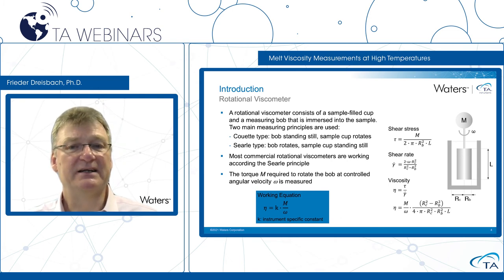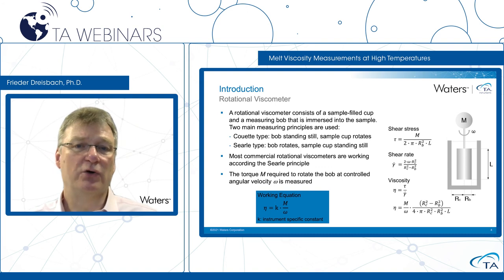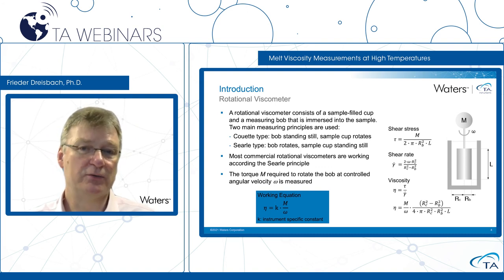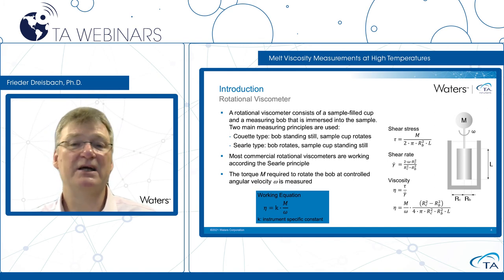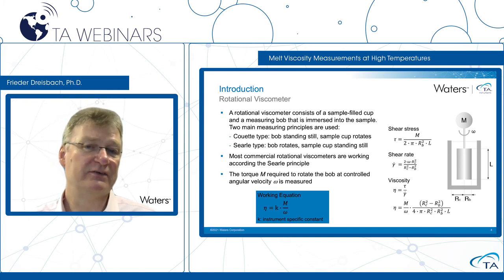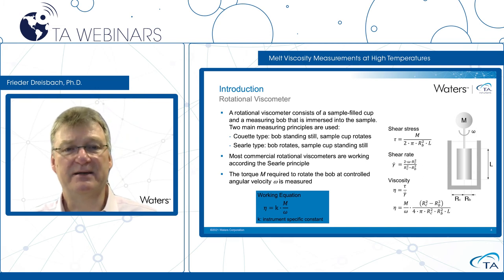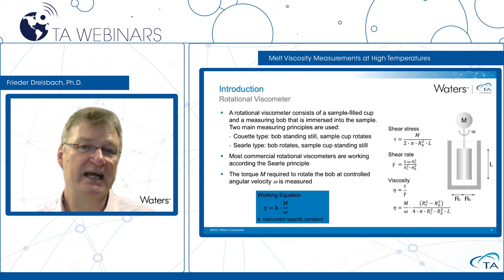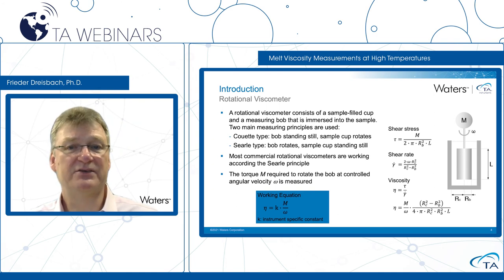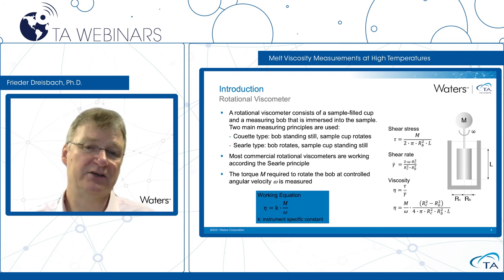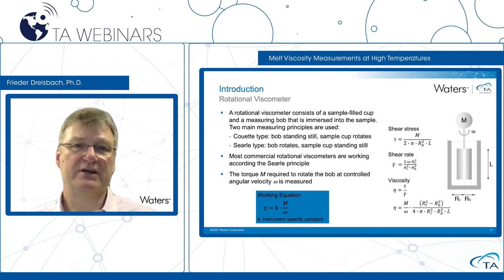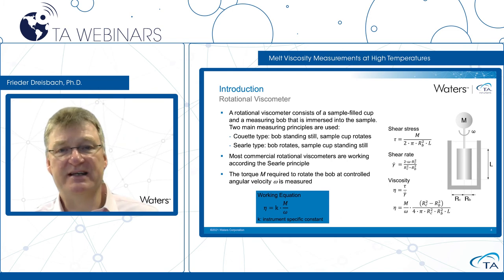Practically, the instrument-specific constant K is determined by a measurement with a reference fluid of known viscosity. If we know the viscosity (the left side of our equation), measure the torque M, and control the angular velocity omega, we have all quantities except K. So with a reference measurement using a reference fluid, we can determine K and use this later for measurements with unknown fluids.